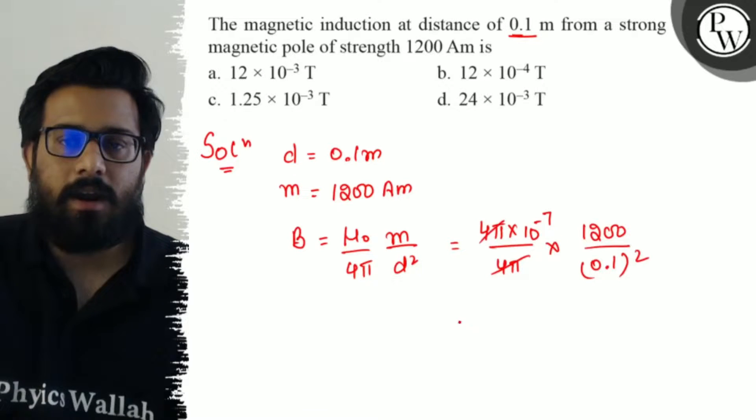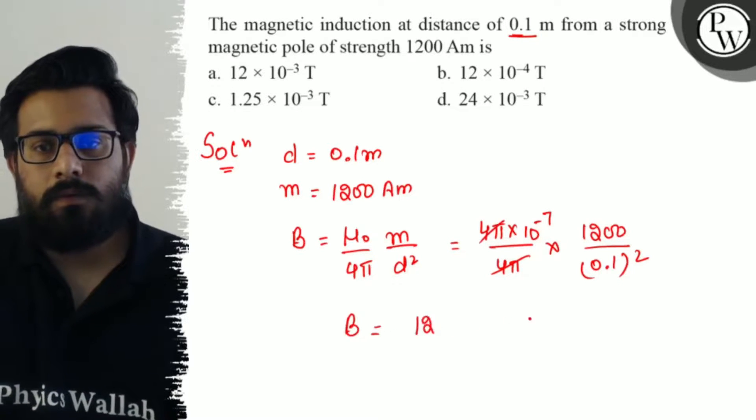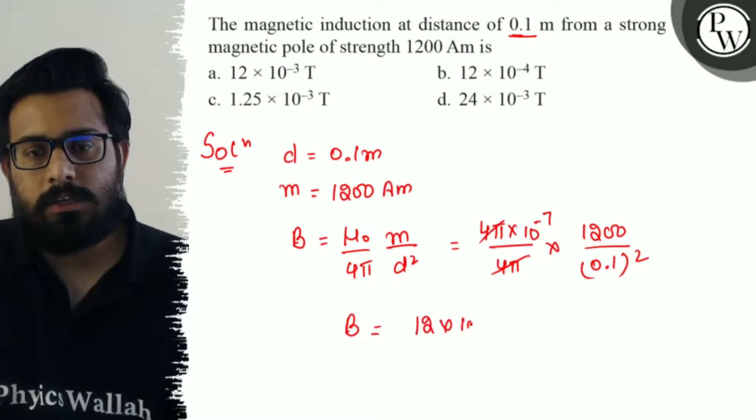Four pi cancels with four pi, so B's value will be 12 × 10⁻⁵.